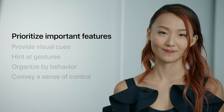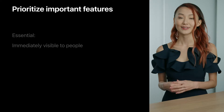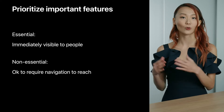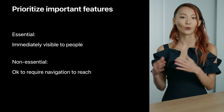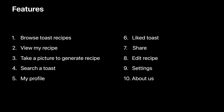So first, prioritize important features. Not all pixels are created equal, which is great, because neither are all of our features. The essential parts of your app should be immediately visible to people. It's okay for the non-essential parts to require some navigation to reach. When we were designing Toasty, we wrote down a list of all the important features. There are a lot of features, and there's no way they're all going to fit into one screen, so we really need to prioritize which features are important.